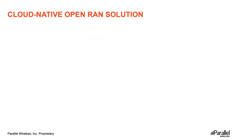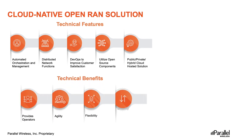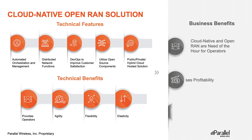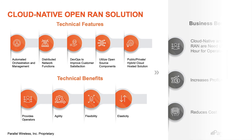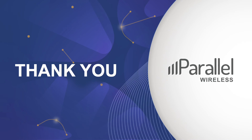To summarize, Cloud-Native Open RAN brings several technical features, technical benefits, and business benefits. Technical features include automated orchestration, management, distributed functions, and DevOps. Technical benefits include agility, flexibility, and elasticity. From a business perspective, Cloud-Native Open RAN is a necessity for operators to increase profitability and reduce cost. With that, this session comes to a close. Thank you.